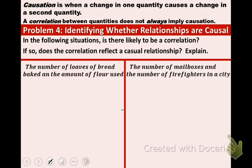Now let's talk about what causation is. Causation is when a change in one quantity causes a change in a second quantity. So the blank for this is causation, and the main word or part of that is cause. One thing causes another thing to change. Now a correlation between quantities does not always imply that there is causation. So now let's take a look at example 4.